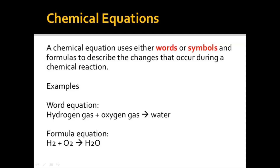For example, in the preparation of water, we use hydrogen gas and oxygen gas. The first equation is a word equation. If we formulate this equation, it is known as a formula equation or skeleton equation — hydrogen gas is rewritten as H₂, oxygen gas as O₂, and water as H₂O.